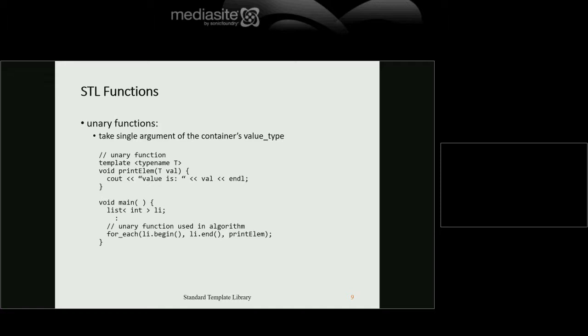The STL expects you to use function objects — functions, functors, or lambdas. Unary callable objects take a single argument. For example, you can define a unary function print_element, and then use for_each with begin and end iterators to apply it to every element. As long as it's a template function, type inference gets it all to compile correctly.